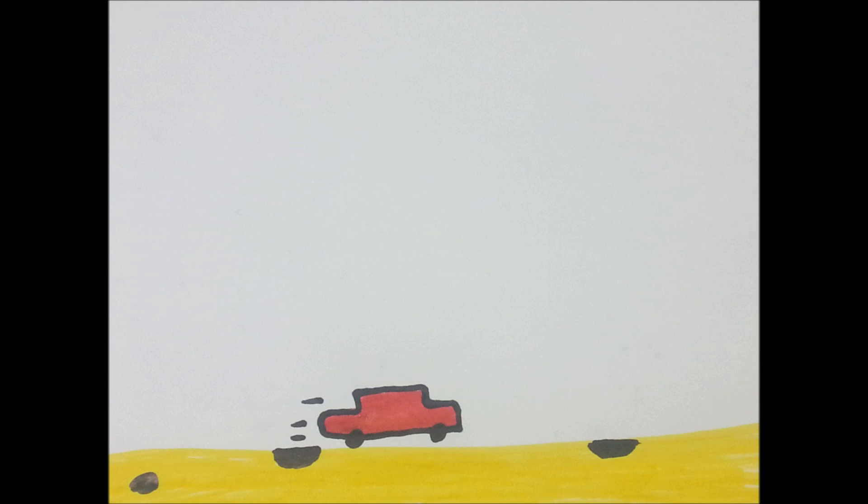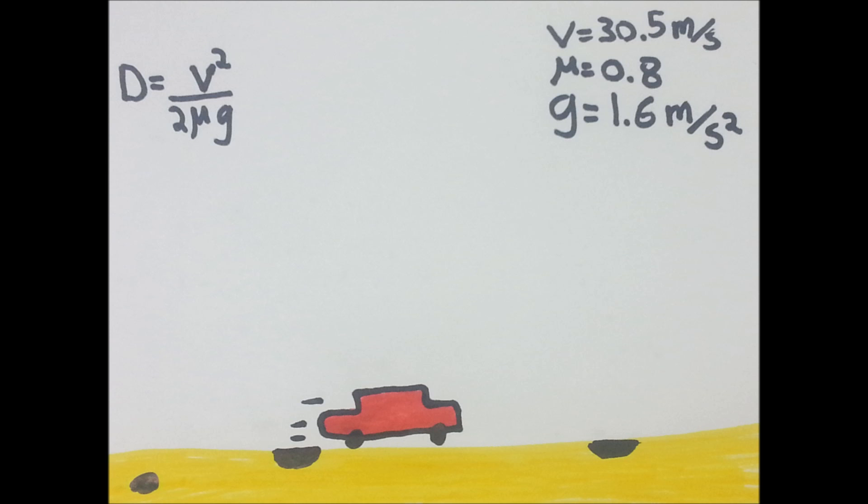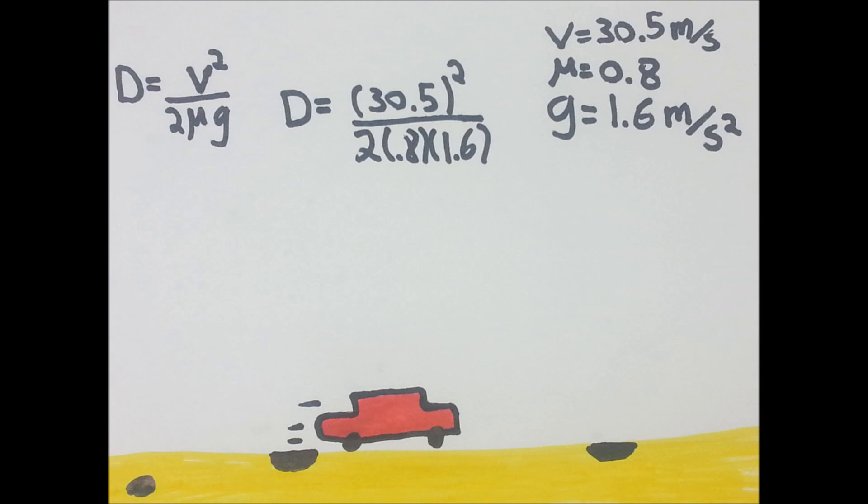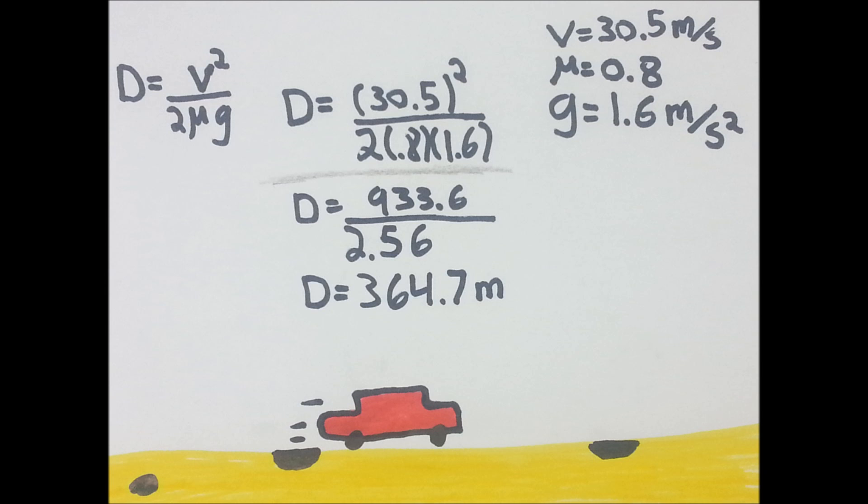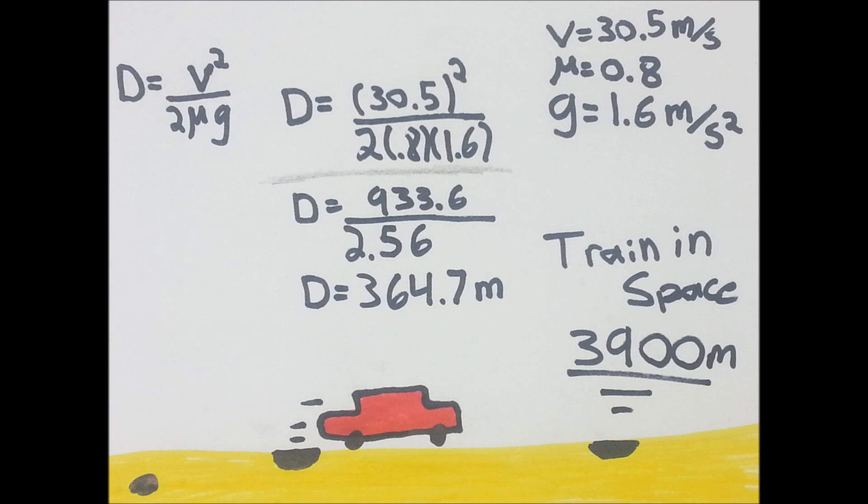So let's bring the car back and see how long it takes to stop on the Moon. When traveling 110 kilometers per hour, it won't take 49.15 meters to stop, but instead 364.7 meters. And the train? It would take well over 3.9 kilometers.